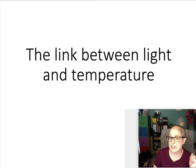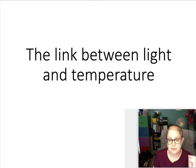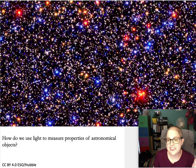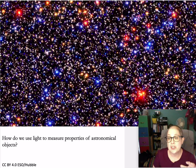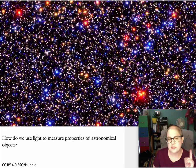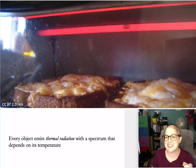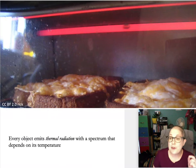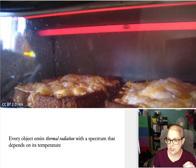Light is useful for many things in astronomy, one of which is figuring out the temperature of objects. If you take a deep image of a crowded star field, such as one from the Hubble Space Telescope, one of the first things you notice is that stars are not all the same color — some are red, some blue, some yellow, some white, some orange. This range of colors is actually giving us an indication of temperature.